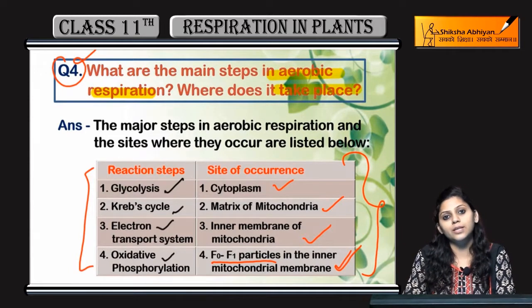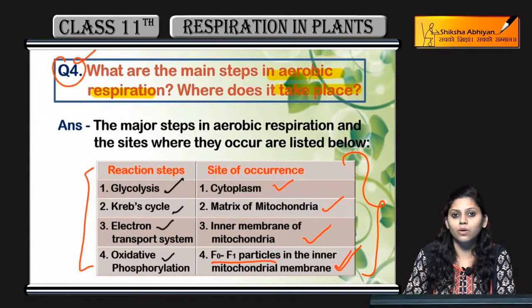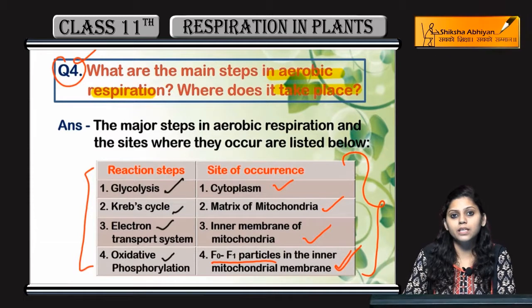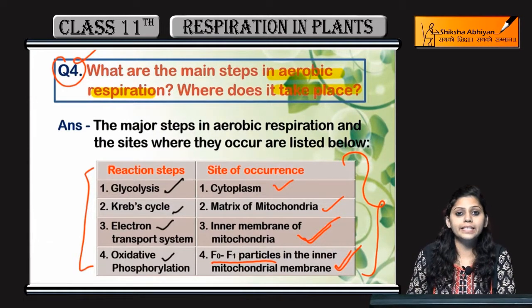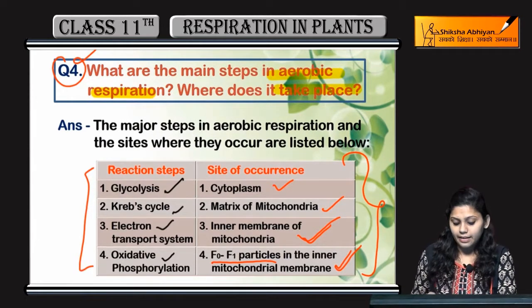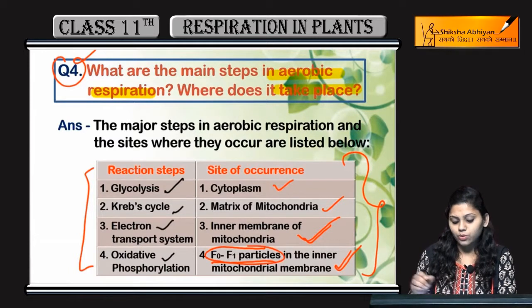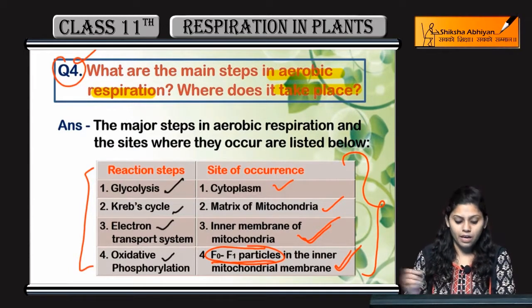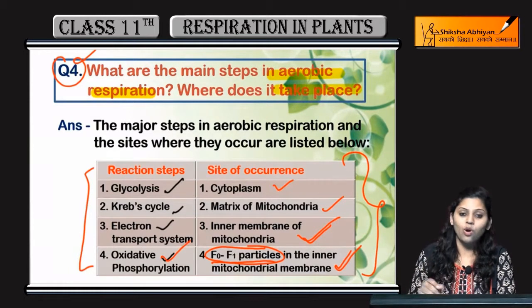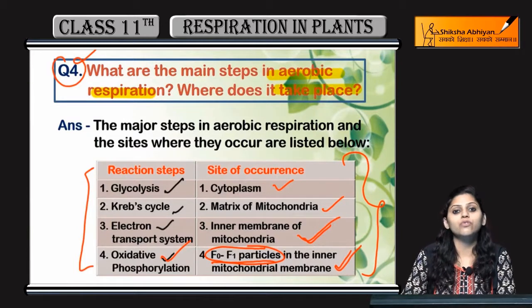To summarize: glycolysis occurs in the cytoplasm, Krebs cycle in the matrix of mitochondria, ETS in the inner membrane of mitochondria, and oxidative phosphorylation at the F0-F1 particles on the inner mitochondrial membrane.